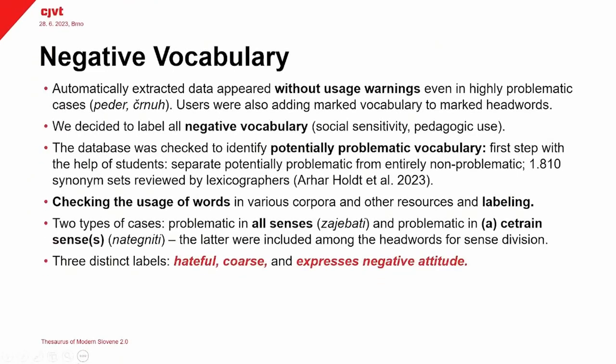I have two more slides about how we labeled negative vocabulary in the dictionary. We of course want to have a socially sensitive dictionary that can also be used for pedagogic purposes. With thesaurus 1.0 we had a big problem because the automatically extracted data appeared without any usage warnings, even for highly problematic cases. Like here you have two very derogatory words — the first one for a gay man and the second one for a dark-skinned man — and these words appeared without any labels or warnings in the dictionary.